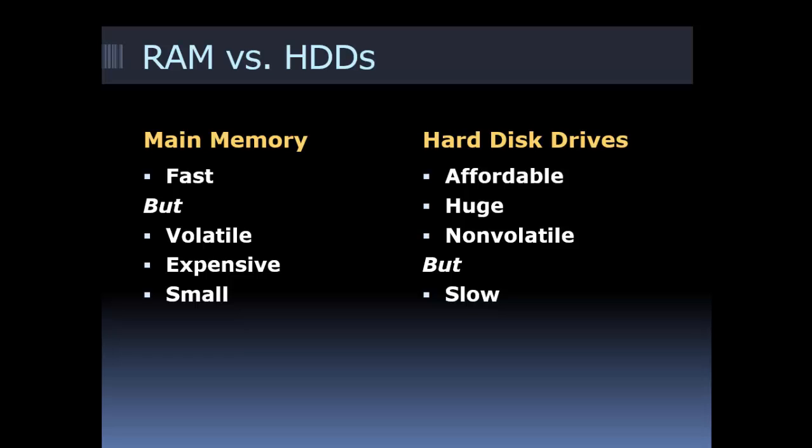Let's compare the two: main memory versus the hard disk drive. Main memory's chief advantage is that it's fast, but it's volatile — it loses its data. If there's a power failure, it's kind of expensive considering the amount of data it holds, and therefore it's relatively small. The hard disk drive, by comparison, is affordable — pretty inexpensive on a per-byte basis. For that reason it can be huge; you can have a terabyte — a thousand gigabytes or more — and it's non-volatile, so the data will stay there for a long time. But the problem with the hard disk drive is that it's relatively slow.